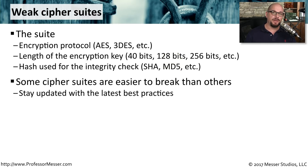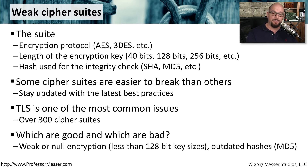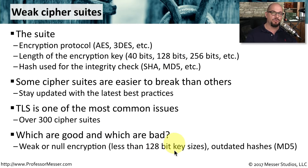The problem is that some cipher suites are easier to crack than others. You want to make sure you're using the strongest ones and staying updated to avoid any vulnerabilities. One of the most common cipher suites is TLS or SSL used on web servers. There are over 300 different combinations that make up these 300 cipher suites for TLS. The challenge for a security professional is to figure out which ones are good and which ones are bad. You should avoid anything that's weak or null encryption, anything less than 128 bits for example, and make sure you're using the latest hashing technologies — don't use something like MD5 that has known vulnerabilities associated with it.